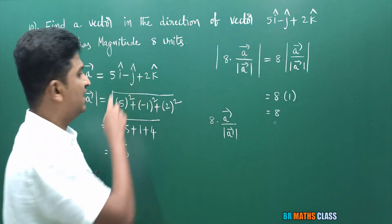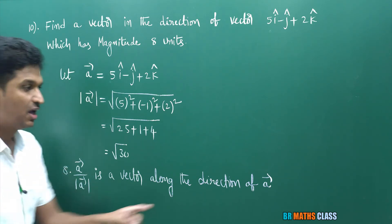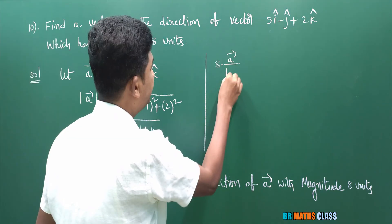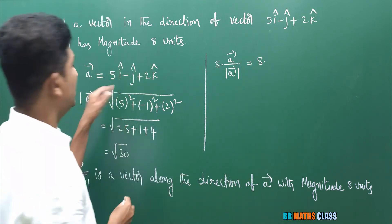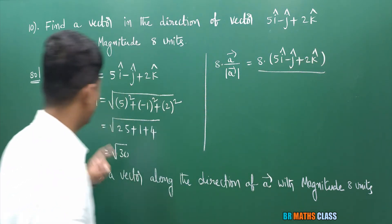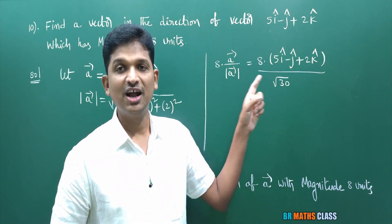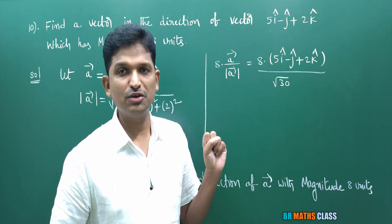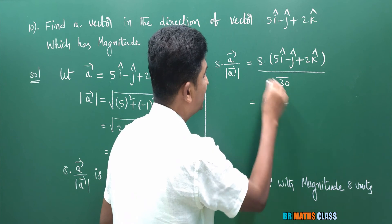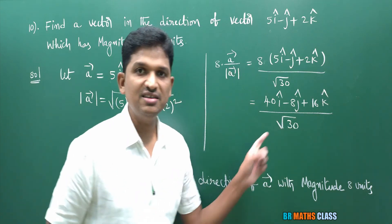So the required vector in the direction of the given vector with magnitude 8 units is 8 times a⃗ divided by magnitude of a⃗. Here a⃗ is 5i cap minus j cap plus 2k cap, and magnitude of a⃗ is root 30. Simplifying: (8 times 5)i cap minus 8j cap plus (8 times 2)k cap divided by root 30, giving (40i cap minus 8j cap plus 16k cap) divided by root 30. This is the required answer.